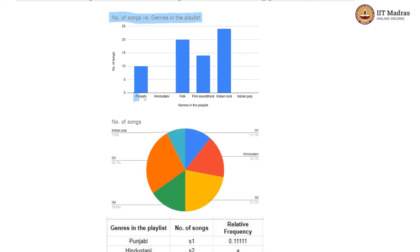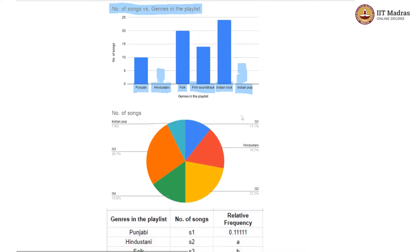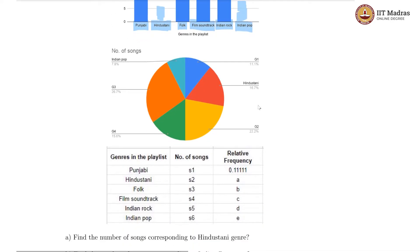There are these genres: Punjabi, Hindustani, folk, film soundtrack, Indian rock, and Indian pop. And the number of songs for each of these are given. Actually, not for all of them. Hindustani and Indian pop are empty. There is nothing over there. So this is an incomplete bar graph. Now, let us look at the pie chart.